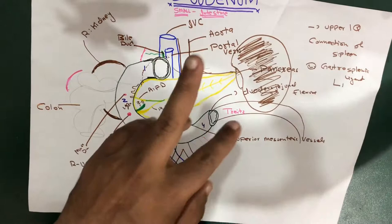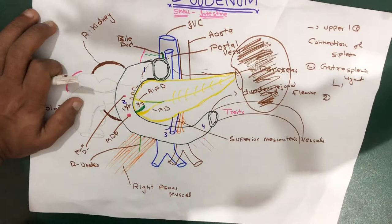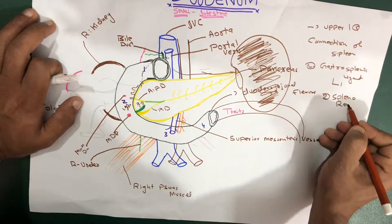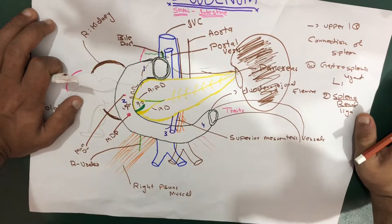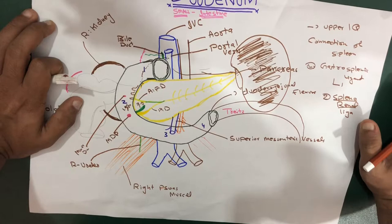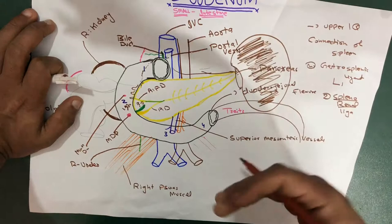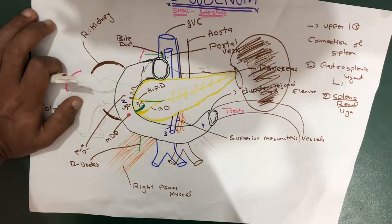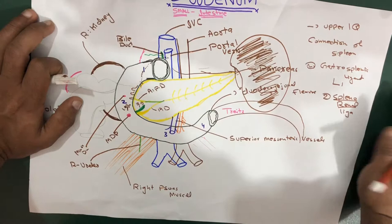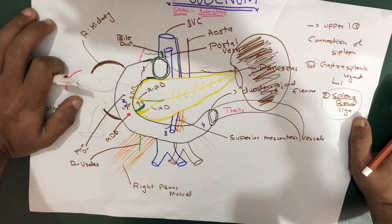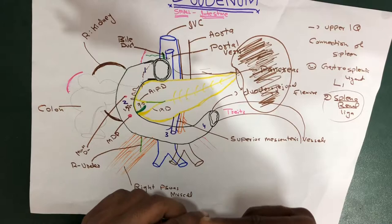The second ligament is the splenorenal ligament. 'Spleno' means spleen and 'renal' means kidney, so they are connected by the splenorenal ligament. It is connected posteriorly to the splenic hilum and to the left kidney. Remember that the tail of the pancreas and splenic vessels lie within this splenorenal ligament. And between these two ligaments — the gastrosplenic ligament and the splenorenal ligament — is the lesser sac.